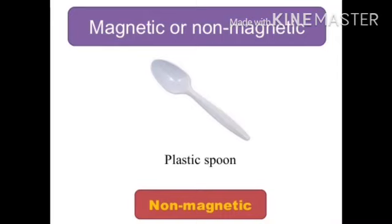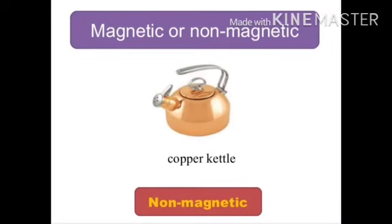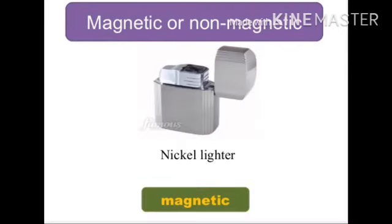A plastic spoon is non-magnetic as it is made of plastic, which does not attract towards the magnet. A copper kettle is non-magnetic because copper is not attracted towards the magnet. A nickel lighter is a magnetic substance because nickel is attracted towards the magnet.